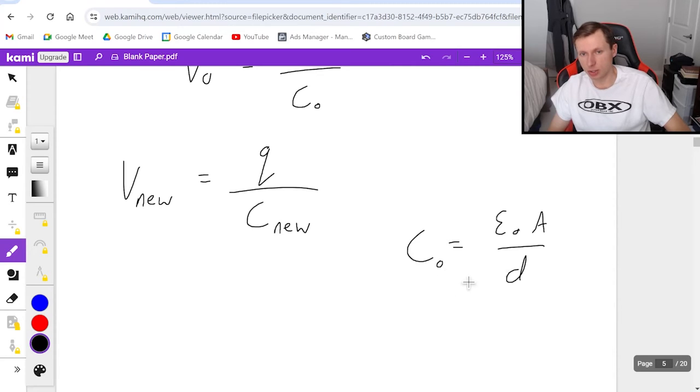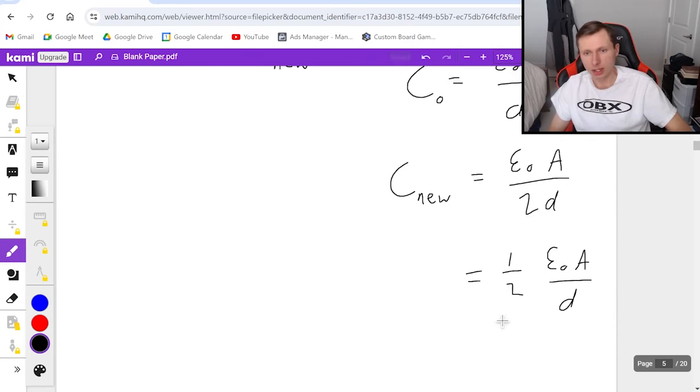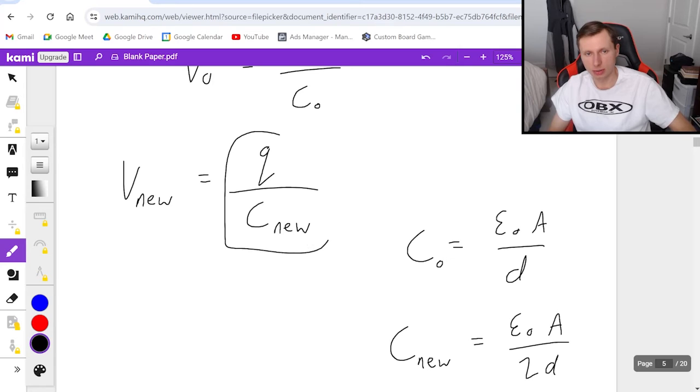Which I can rewrite like this by pulling out the one half out in front. And the reason why I would do this is because this quantity right here is my original C naught, meaning my new capacitance is equal to one half times C naught. Maybe you saw that a different way, an easier way to you. Great, then you can do it that way. But this is the way I'm doing it. And this is my new capacitance, which I will now be plugging in this equation right here.